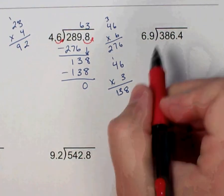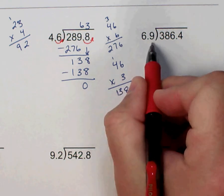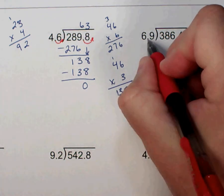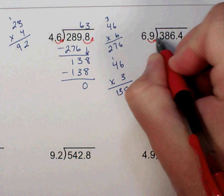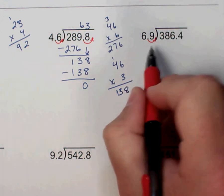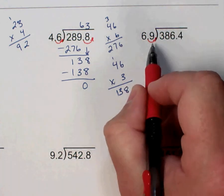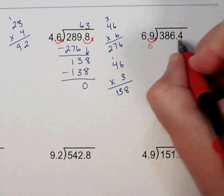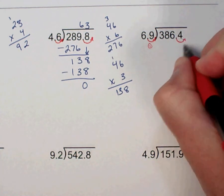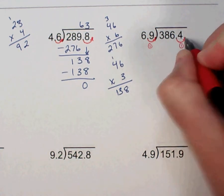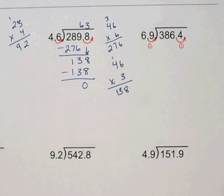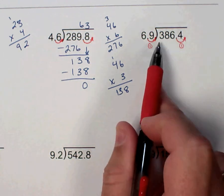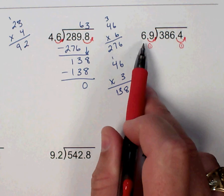Again, I'm just going to look and see. I need to make this into a whole number, so I've got to get rid of the decimal. So I'm just going to move the decimal over as many places as I need to. In this case, it's just one. So I move the decimal one place here, which means I need to move my decimal one place here. And so my new problem is 3,864 divided by 69.